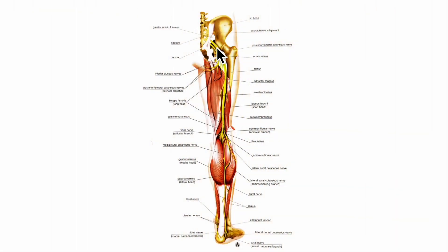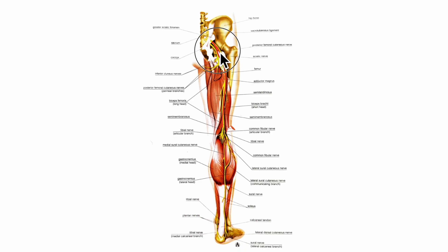The sciatic nerve is the thickest nerve in the body. In its upper part it forms a band that is about 2 cm wide. It begins in the pelvis and terminates at the superior angle of the popliteal fossa by dividing into the tibial and the common peroneal nerves.